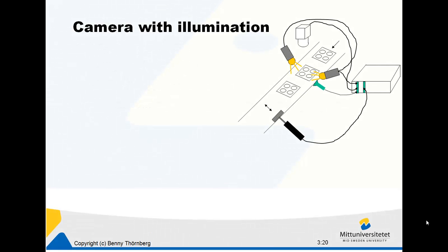What we see here is a principal sketch of a machine vision system used for inspection of items at production. Here is a conveyor belt with metal plates coming along it that have drilled holes. The idea here is that the machine vision system is supposed to inspect the diameters of these drilled holes.